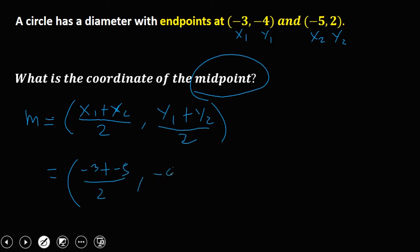and -4 + 2, that's -2 over 2. So therefore, the coordinate now of the midpoint is (-4, -1).